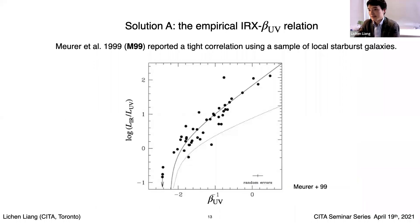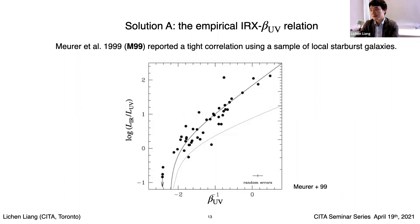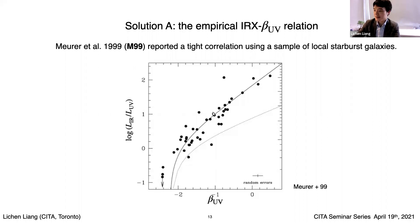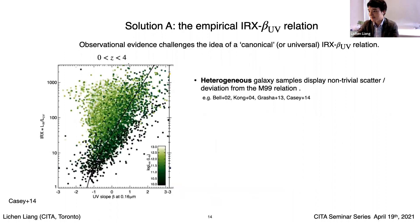These are the two commonly used techniques to extrapolate obscured SFR in the early universe. What makes solution A promising is the finding from about 20 years ago — Meurer et al. 1999 — which for the first time reported a tight correlation between IRX and beta using a local sample of starburst galaxies. As long as you have a good constraint of UV luminosity and the beta slope from multiple UV bands, by applying this empirical relationship you can extrapolate IR luminosity of high-redshift galaxies.